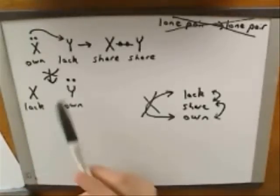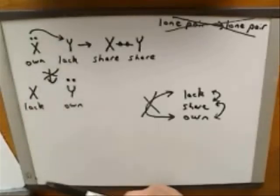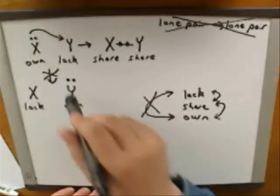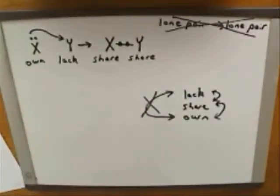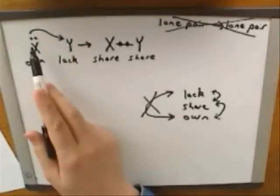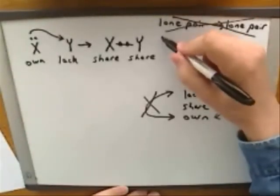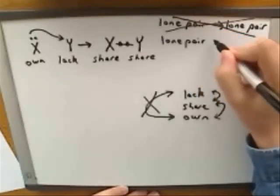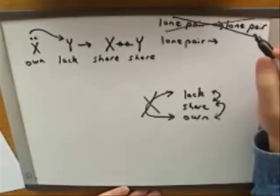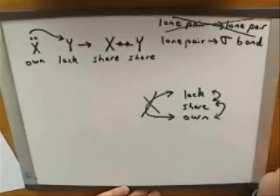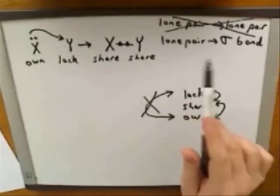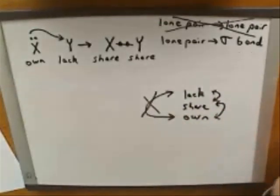So what have we learned how to do? We've learned how to take a lone pair and turn it into a sigma bond. Single bonds are sigma bonds, so we've learned how to take a lone pair and turn it into a single bond, also called a sigma bond.